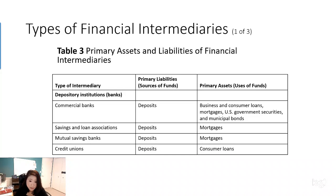The third type of depository institution is called a credit union. In the United States, we have about 6,000 credit unions. They are typically very small cooperative lending institutions organized around a particular group — such as a labor union or employees of a particular firm. They acquire funds from deposits, which we usually call shares, and primarily make consumer loans.